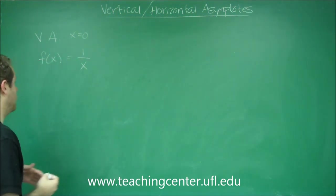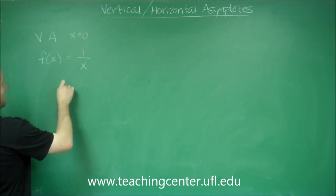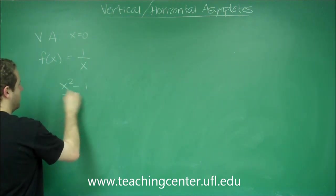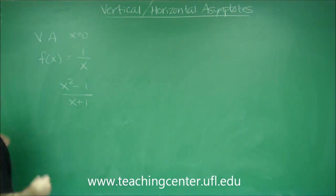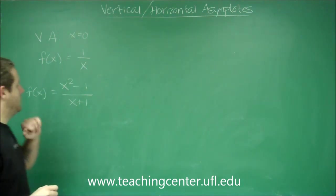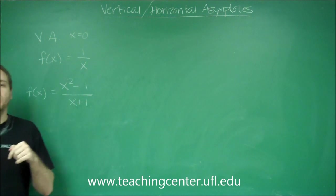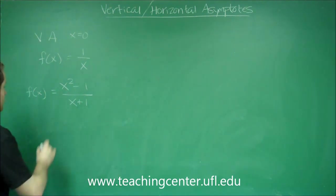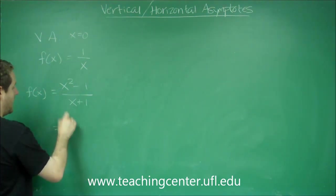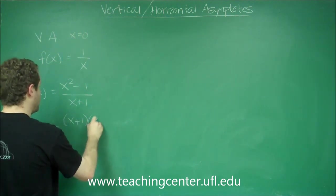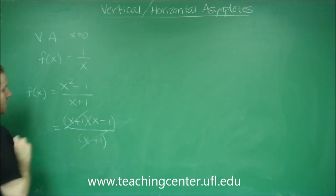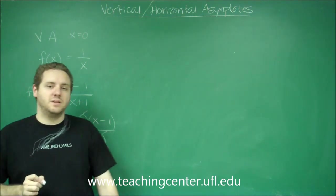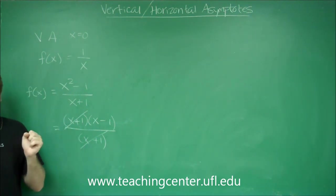But for example, if you had the problem x squared minus one over x plus one, you might think you have a vertical asymptote at negative one, but you should always try to simplify first. The top factors as the difference of two squares. Those cancel out and now you actually don't have anything on the denominator. So that function does not have a vertical asymptote.